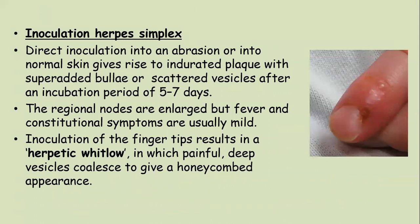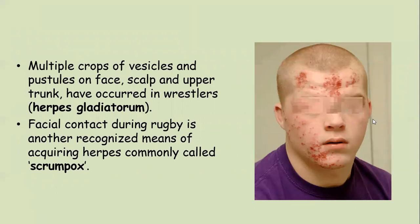Inoculation herpes simplex: direct inoculation into an abrasion or normal skin gives rise to an indurated plaque with superadded bullae and scattered vesicles after an incubation period of five to seven days. Regional nodes are enlarged but fever and constitutional symptoms are usually mild. Inoculation of fingertips results in herpetic whitlow — painful deep vesicles coalesce to give a honeycomb appearance. Multiple crops of vesicles on the face, scalp and upper trunk have occurred in wrestlers; this is called herpes gladiatorum. Facial contact during rugby is another recognized means of acquiring herpes, called scrumpox.